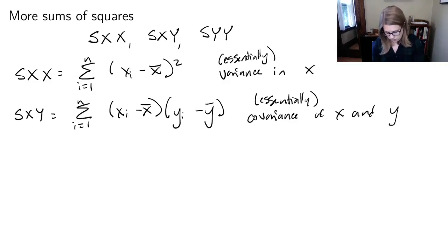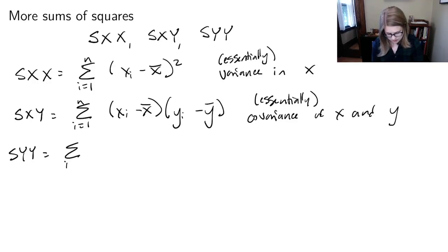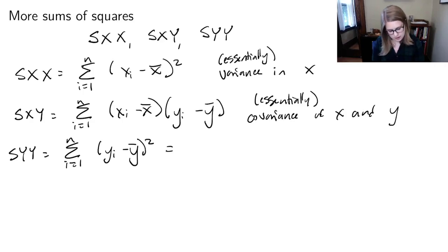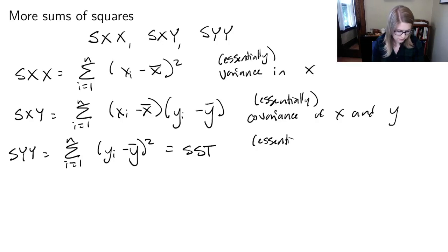And then S_YY, which we've seen before, is the sum from i equal one to N of Y_i minus Y_bar squared. That's the same as the SST, and it is essentially the variance in Y.